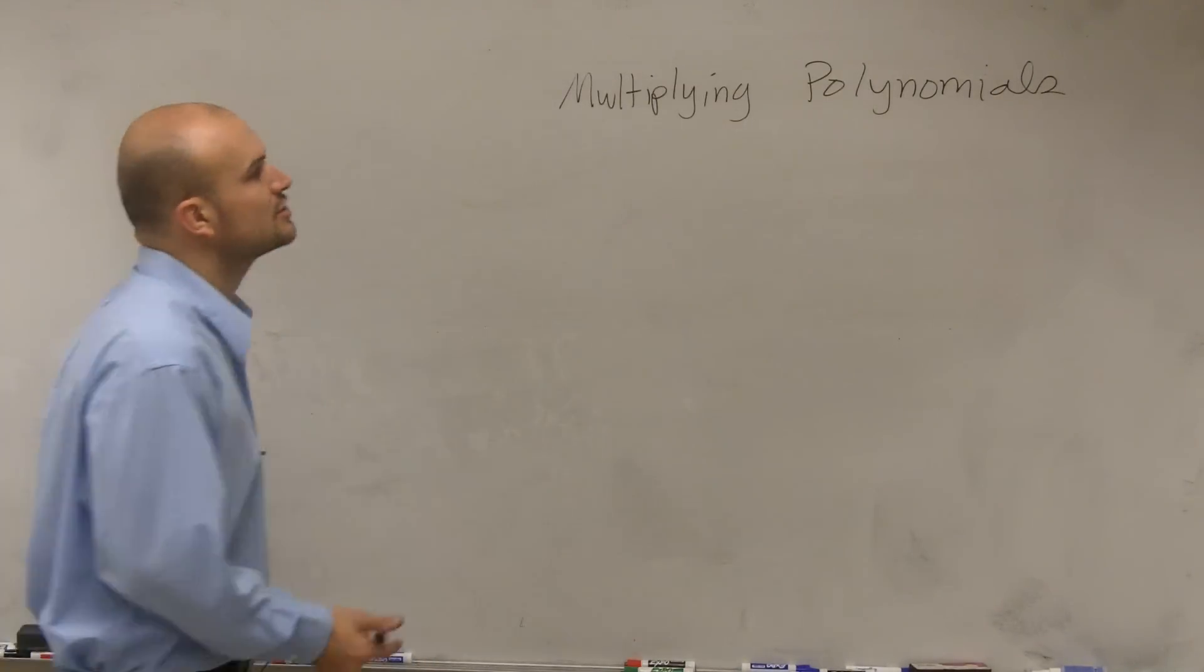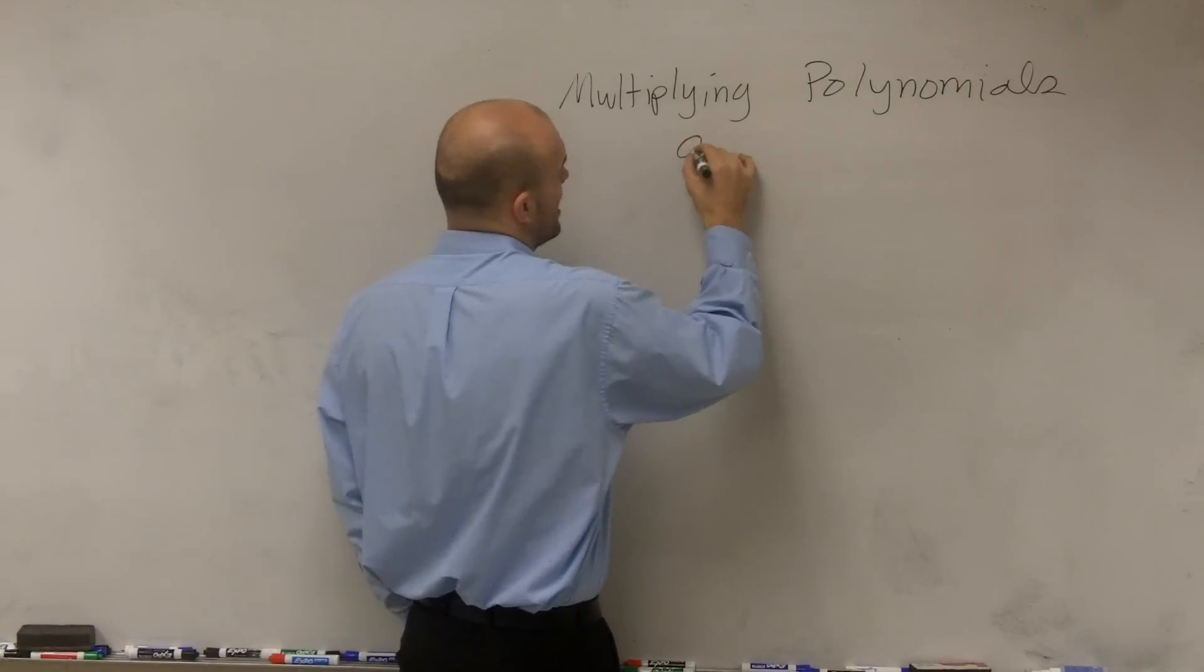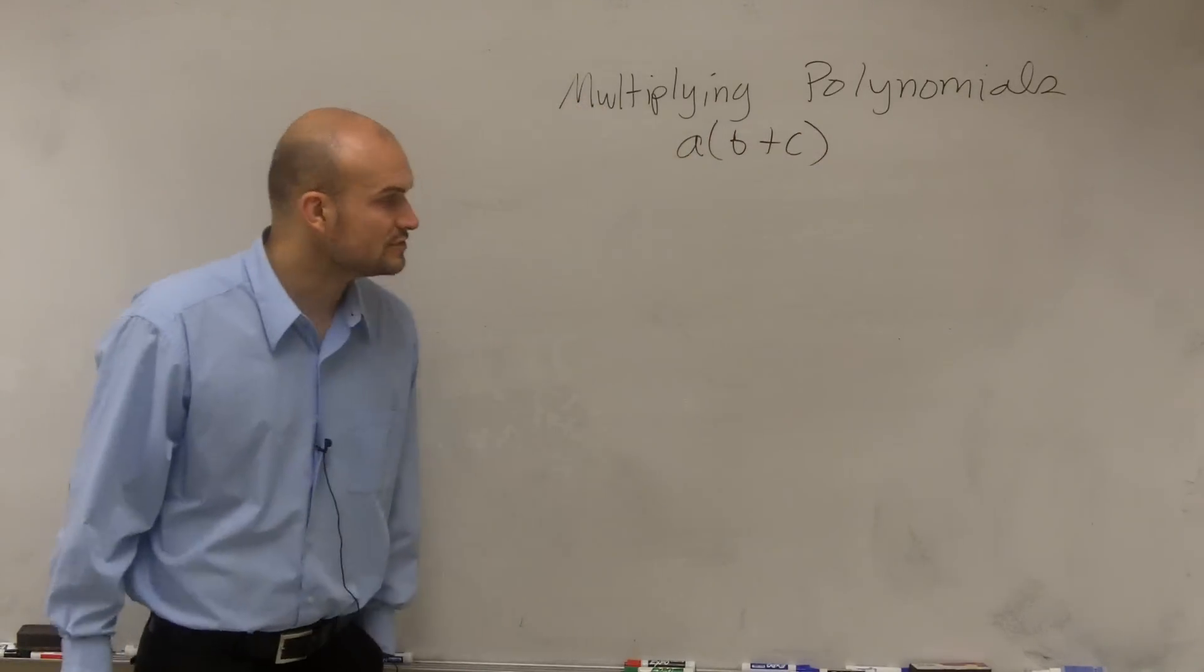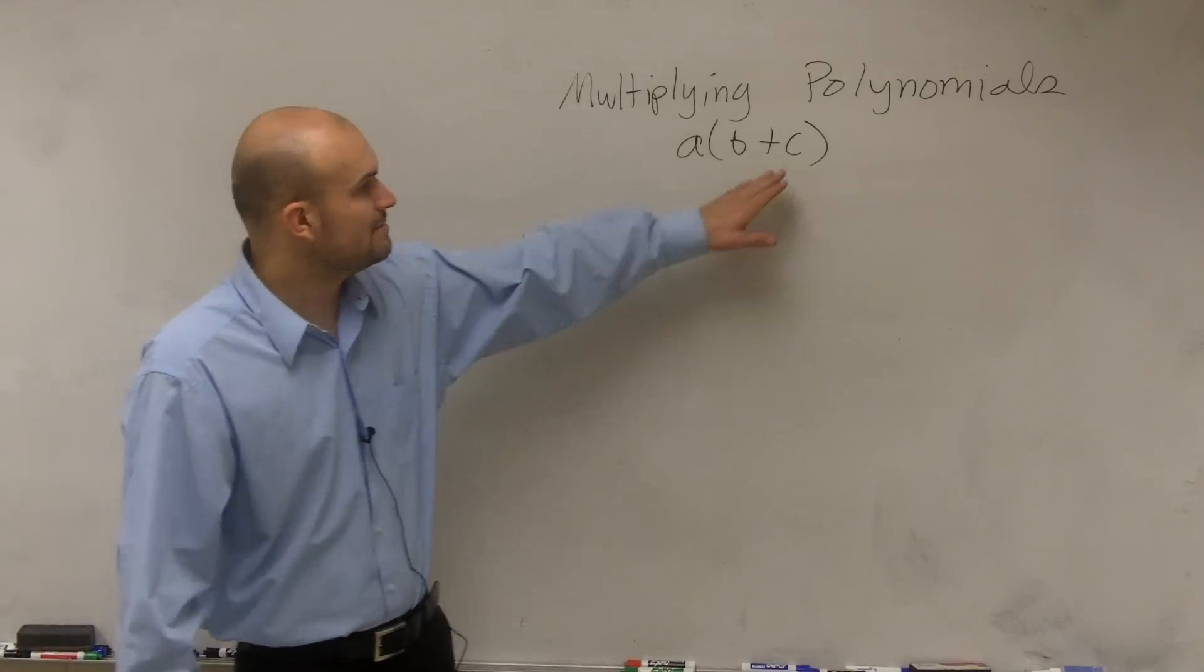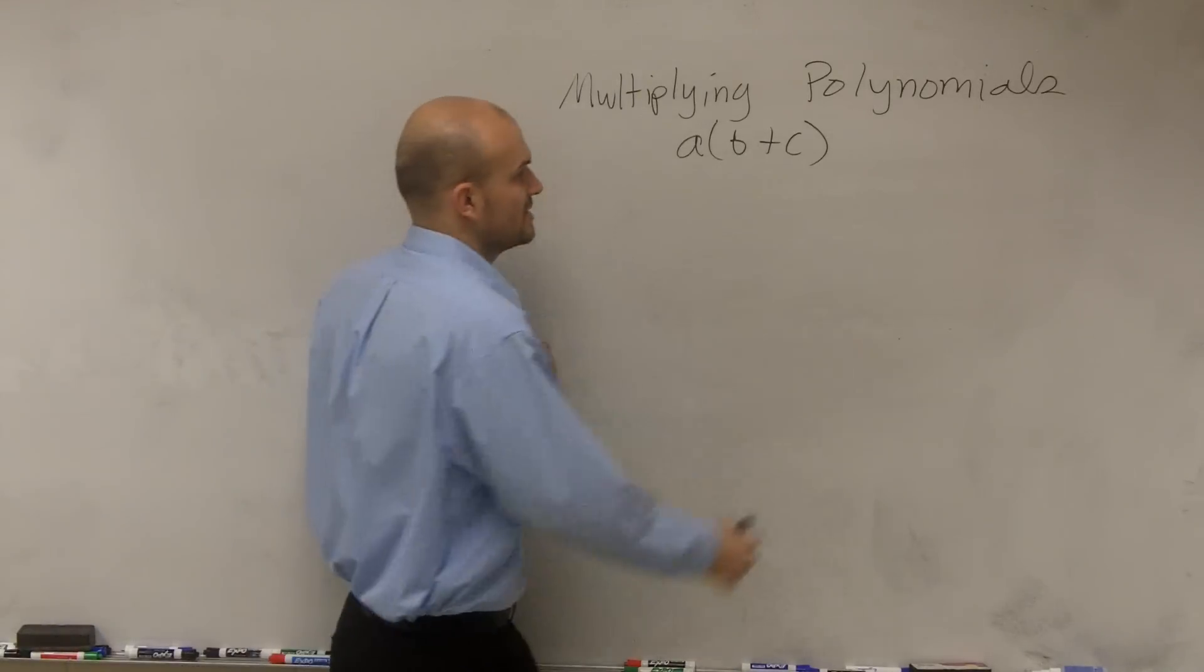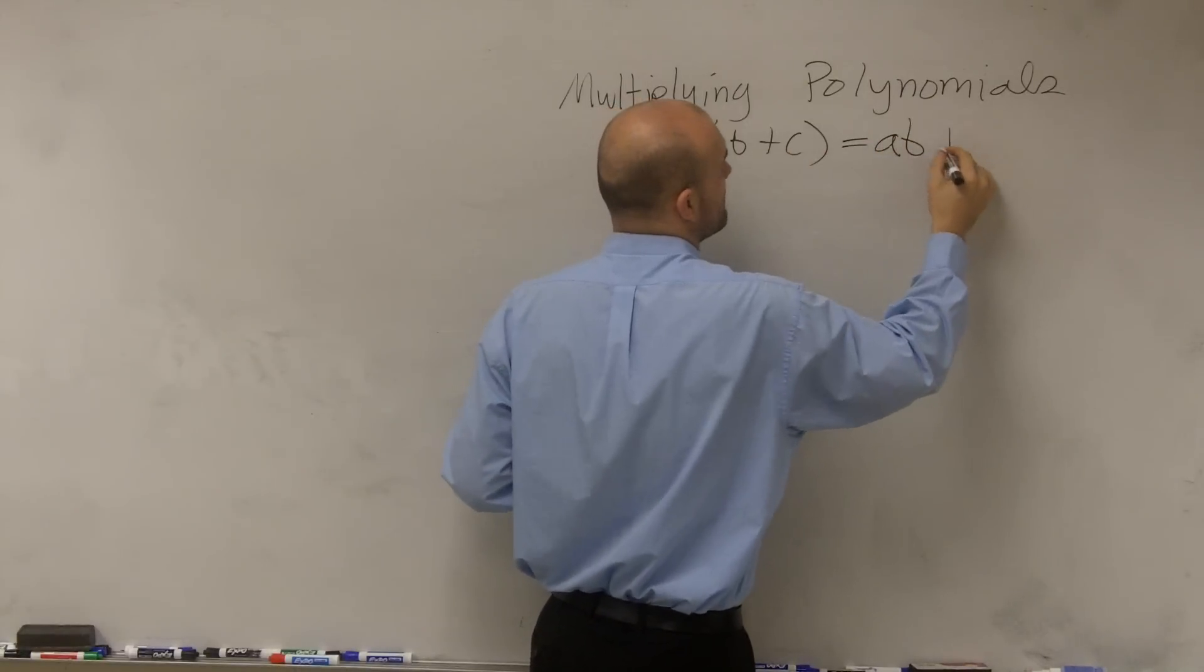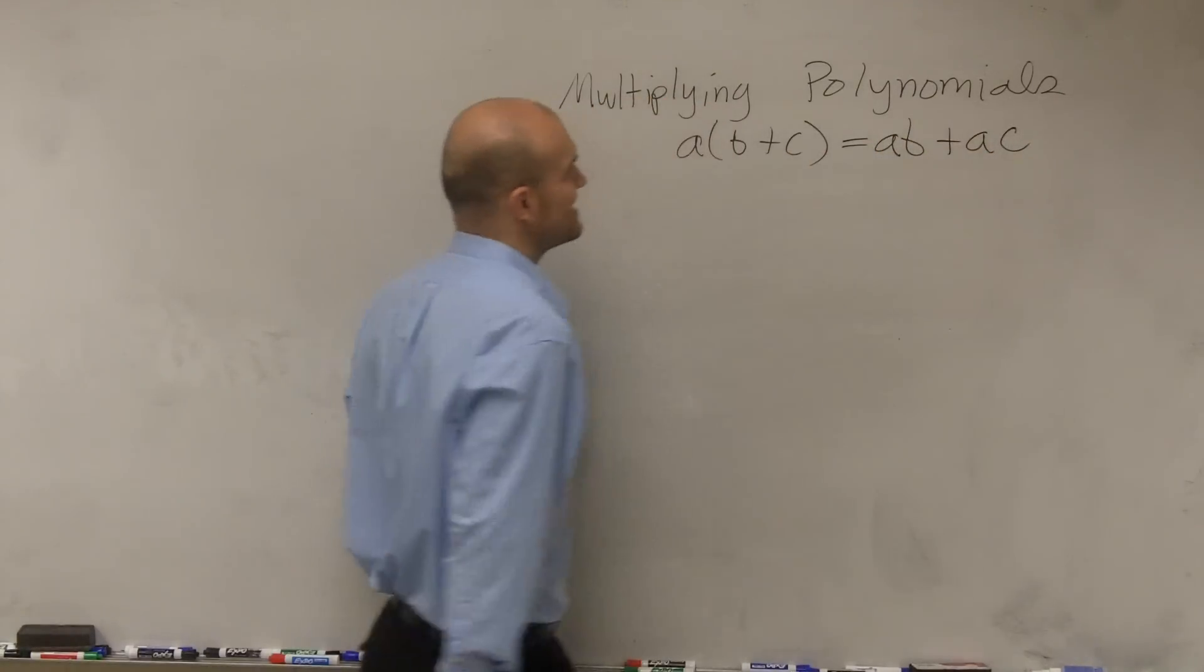The first one is going to be using the distributive property. So the distributive property states that when you have two terms inside of a parenthesis being multiplied by a term outside the parenthesis, that is going to equal the term outside the parenthesis multiplying by both of the terms inside of the parenthesis.